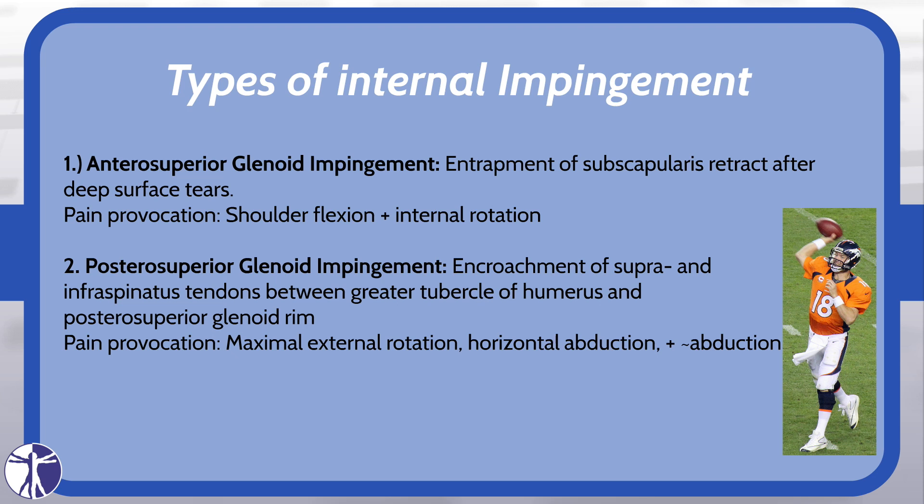Antero-superior glenoid impingement occurs after deep surface tears of the subscapularis retract, which subsequently becomes trapped between the antero-superior glenoid rim and the humeral head. Pain is typically provoked in shoulder flexion with internal rotation.